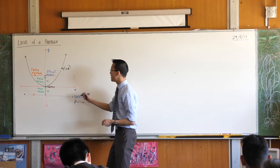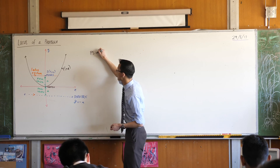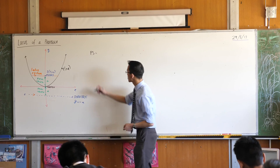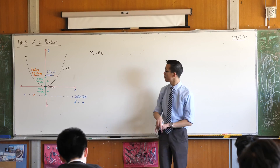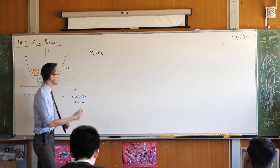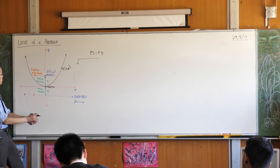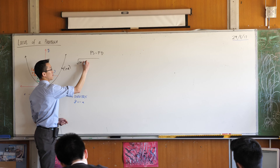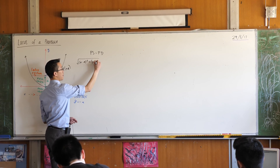The definition is that the distance to the focus, PS, is the same as the distance to the directrix — I'll call it D for directrix. Now, P to S is just two points, so this is really easy to do. You've got the square root on the left-hand side. What's underneath the square root? X minus 0 squared, plus y minus a squared.